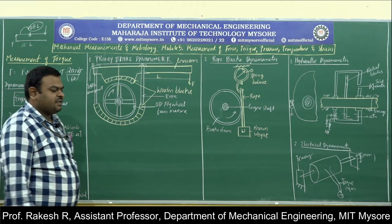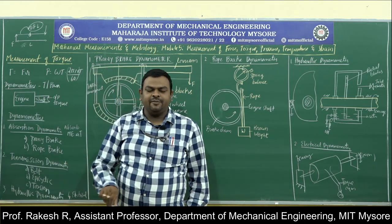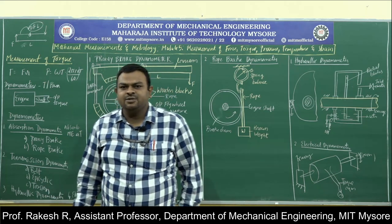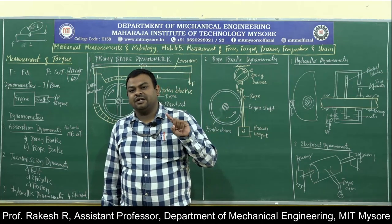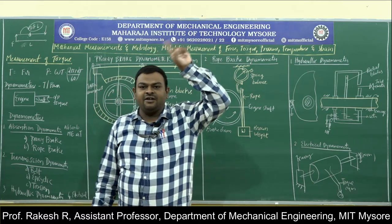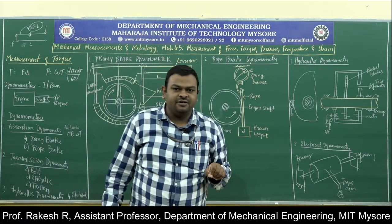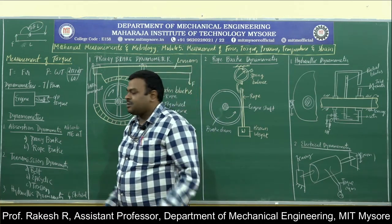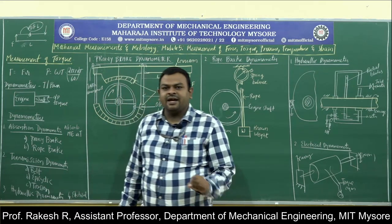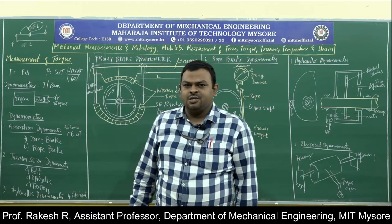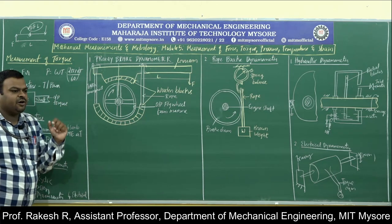Let us take a simple example of measuring torque in an engine. The principle used is the dynamo principle. A dynamo is a device which converts mechanical energy into electrical energy — the reverse of a motor. A motor converts electrical energy into mechanical energy. A fan, for example: you give electrical energy and get rotation as output. The reverse of a motor is a dynamo.